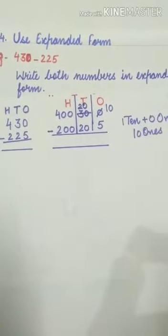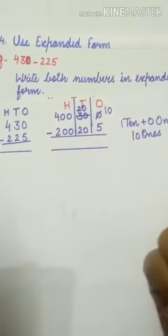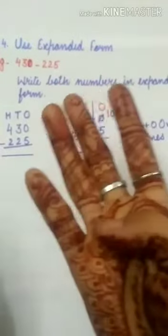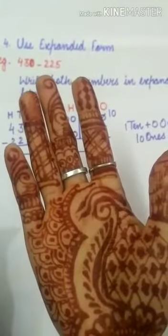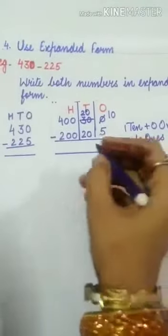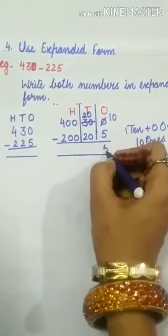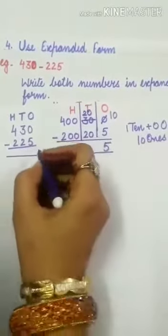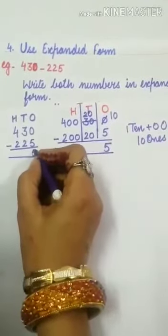Start counting after 5: 6, 7, 8, 9, 10. How many fingers I have used? 5 fingers. So write down 5 at the ones place here.